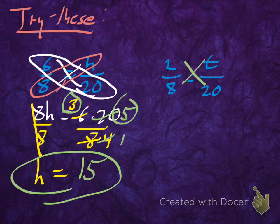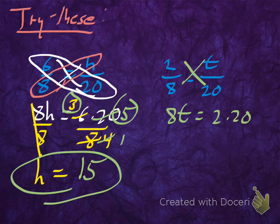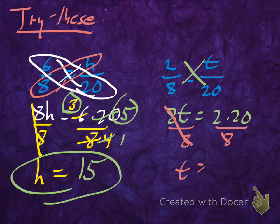On the second one, I'm going to do this a little faster. You should have got 8t is equal to 2 dot 20. Now let's go ahead and divide both sides by 8. We did cross-multiply, and now divide both sides by 8 to get t by itself.